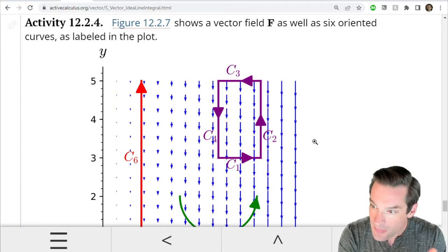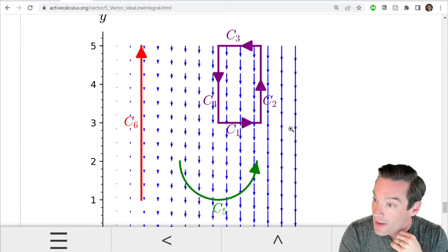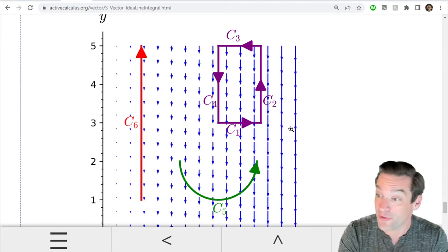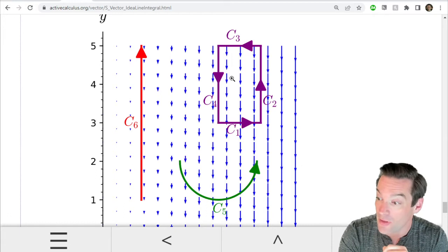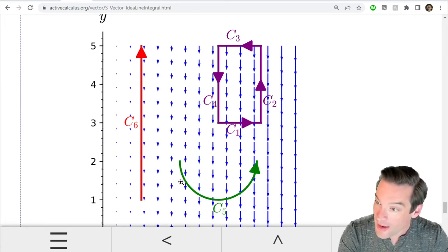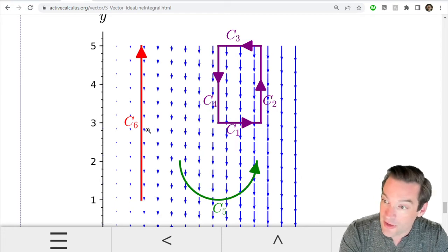And so the way we're going to do this is to look at this vector field that's sketched right here and then six different little path segments. The first four of them making up this counterclockwise rectangle up here. So C1 is the southern side, C2 is the eastern side, C3 is the northern side, C4 is the western. And then I have a semicircular path C5 and this vertical path over here C6.